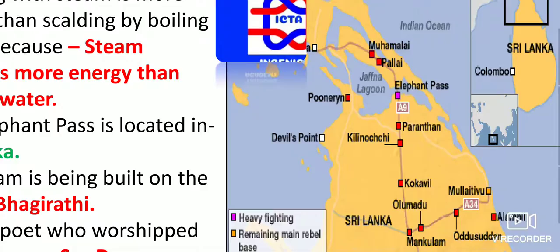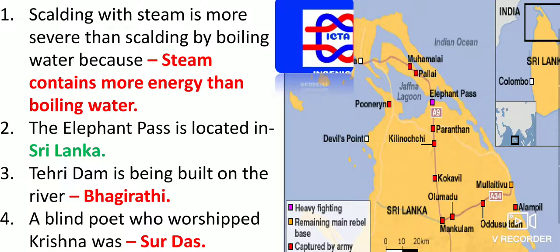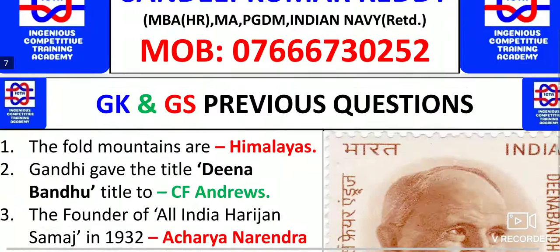A blind poet who worshipped Krishna was Surdas. He was a blind poet who worshipped Krishna, and his name was Surdas.